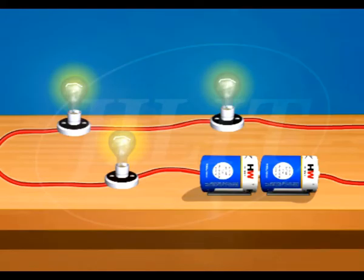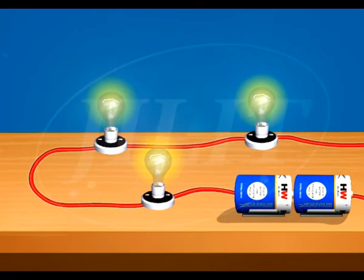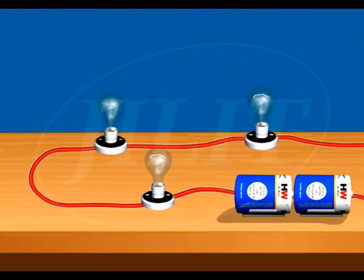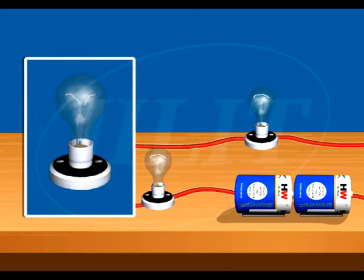In the series circuit, if the filament of any one bulb is broken, the circuit is broken and none of the bulbs will light up.